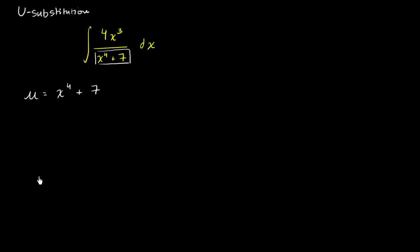Now what is du going to be equal to? du, I will do it in magenta. Well it's just going to be the derivative of x to the fourth plus 7 with respect to x. So 4x to the third plus 0 times dx.